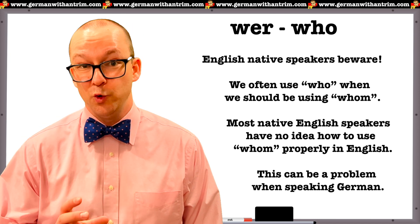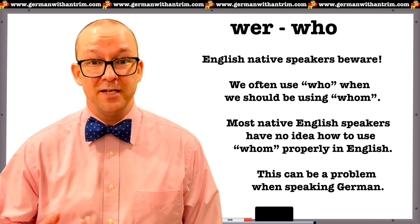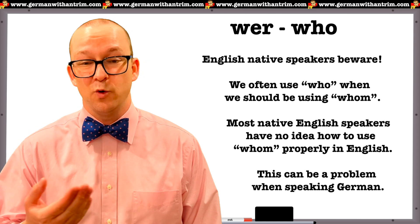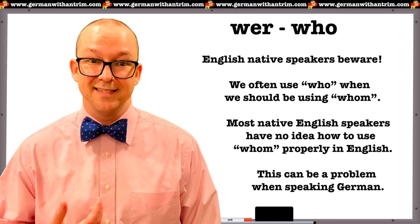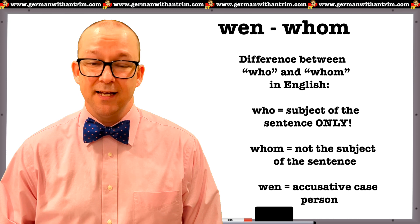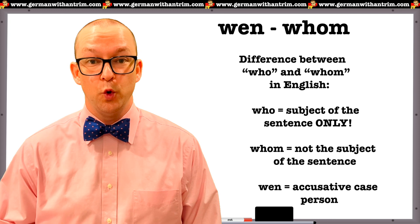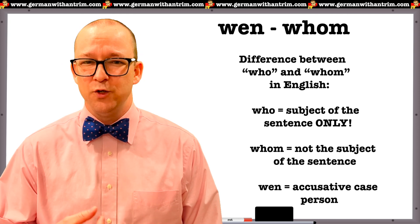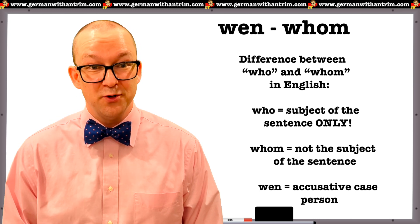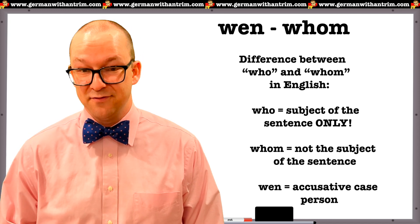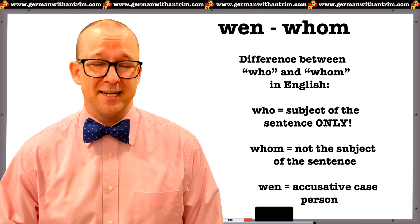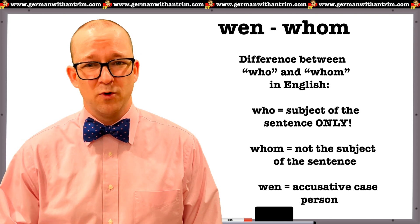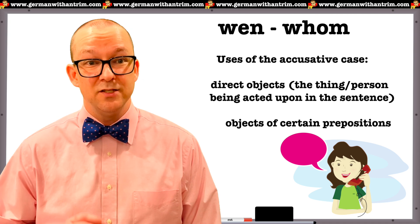The only problem with translating Wer as 'Who' is that native English speakers don't use their own language properly. It's common in spoken English to use 'Who' regardless of how the person appears in the sentence, meaning 'Who' can be a subject or an object. In German, Wer is exclusively used as the subject. This brings us to our second question word: Wen. This question word is best translated with the English word 'Whom.' Wen is used when the person being inquired about is in the accusative case.